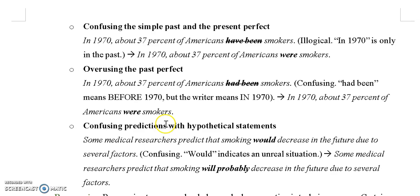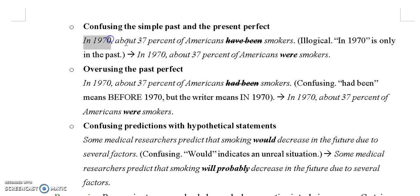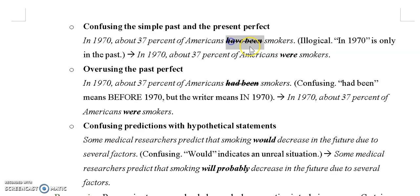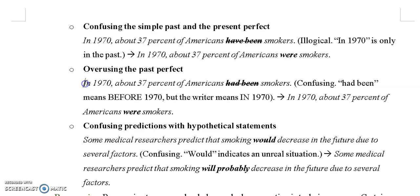Another common mistake is confusing the simple past and the present perfect. They are similar — both involve events that happened or at least started in the past. For example: 'In 1970, about 37% of Americans have been smokers.' That's not logical — 1970 is only in the past; it is not connected to the present. It needs to be simply 'were.' Also, overusing the past perfect: 'In 1970, about 37% of Americans had been smokers' — using 'had been' implies it was before 1970, but clearly it is in 1970. So 'had been' is not acceptable here; it's still 'were.'